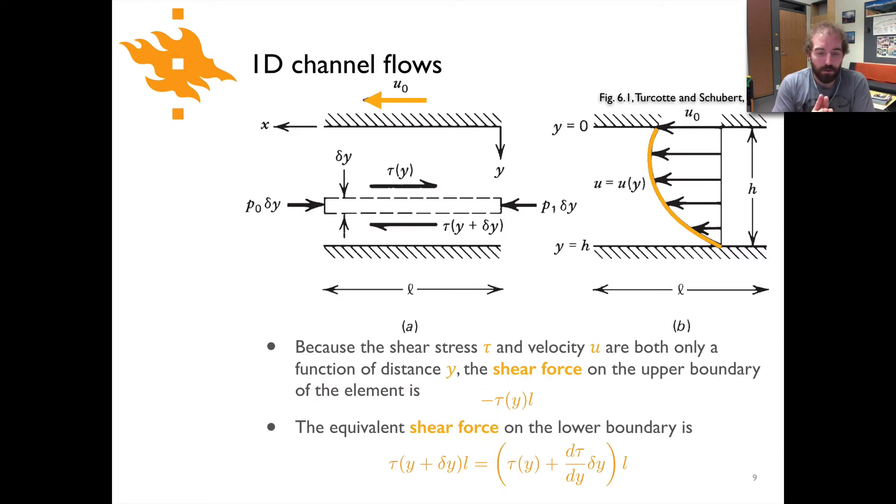Now the shear stress tau and the velocity are both only a function of the distance y from where we are across the channel. The shear stress is going to vary across here as will the velocity and those are only going to vary in one dimension. They won't vary in two dimensions in the case we're considering for a 1D channel.